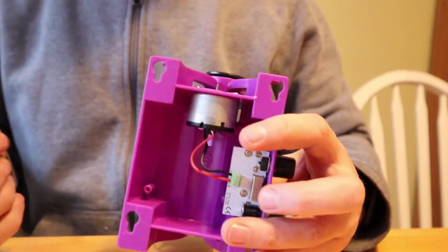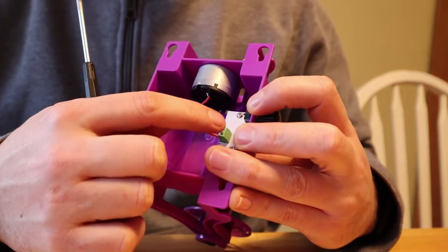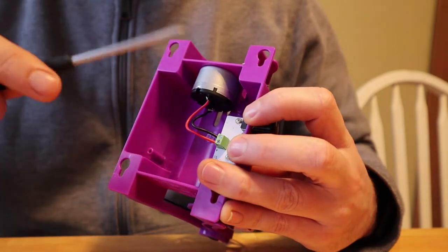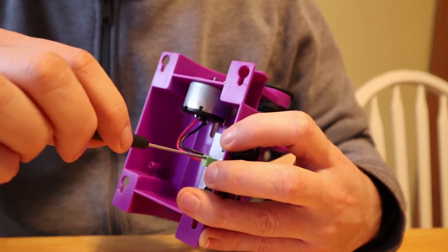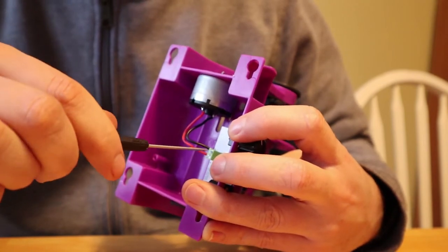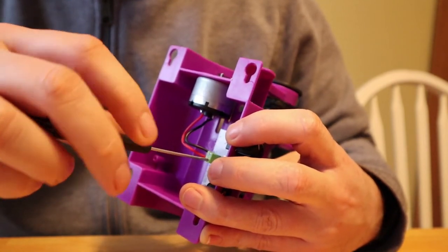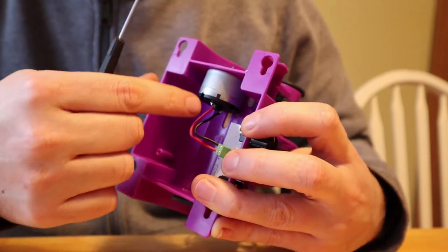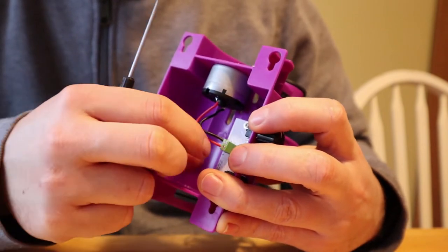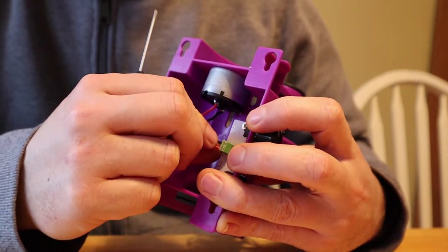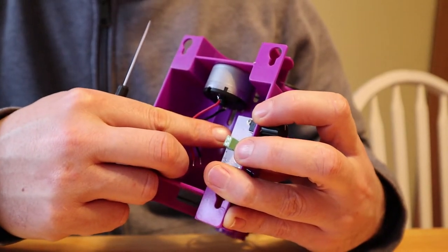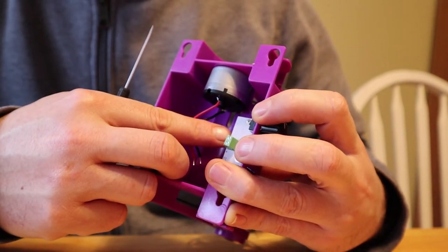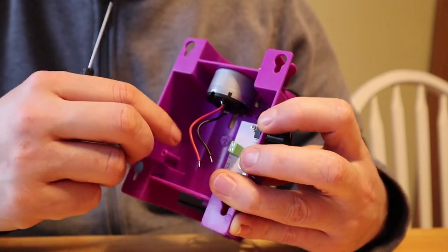The next thing I'm going to do is loosen these screws. They won't actually come all the way out, but this will loosen the wires from the motor that are held into the PCB. So now once I've loosened those, these will just come out. There's a little minus sign here for the place that the black wire goes and a plus sign where the red wire goes.